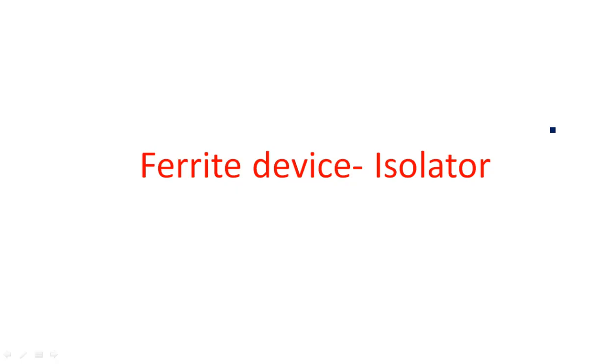In this video I am going to explain about another ferrite device — the isolator. Isolator is another type of ferrite device, like the gyrator. Gyrator, isolator, and circulator are three types of ferrite devices which work with the principle of Faraday's rotation. Faraday's rotation is helpful in the operation of the isolator, gyrator, and circulator.